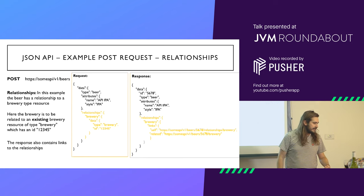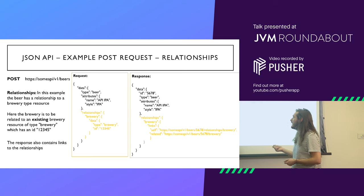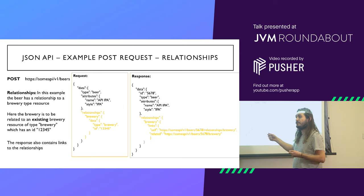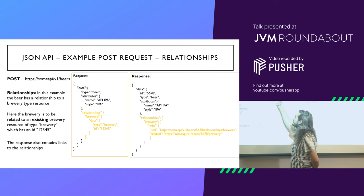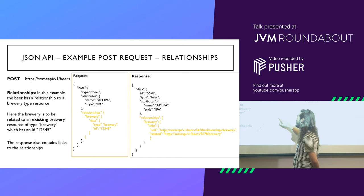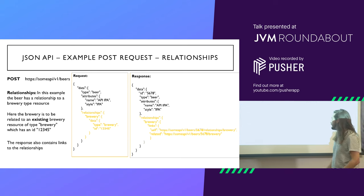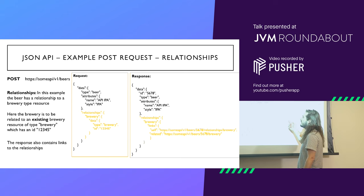Here's an example of creating a beer and linking it to a brewery. What you do is use these things called relationships. This is basically saying: I'm creating a beer called API IPA, IPA as a style, and it's related to brewery 12345, which already exists in the system. The response comes back with the links to that brewery that's already linked, and also the generated ID.